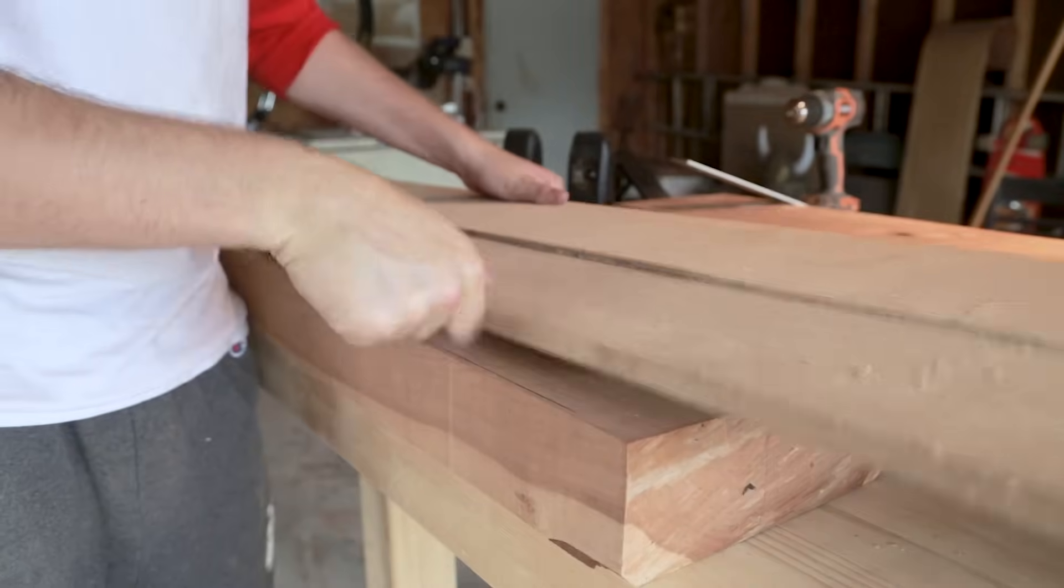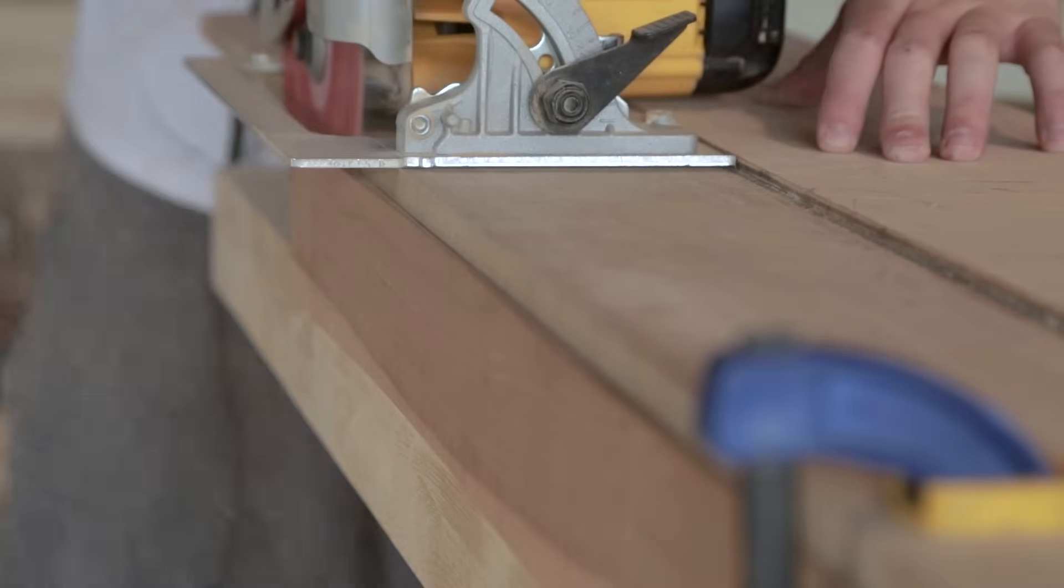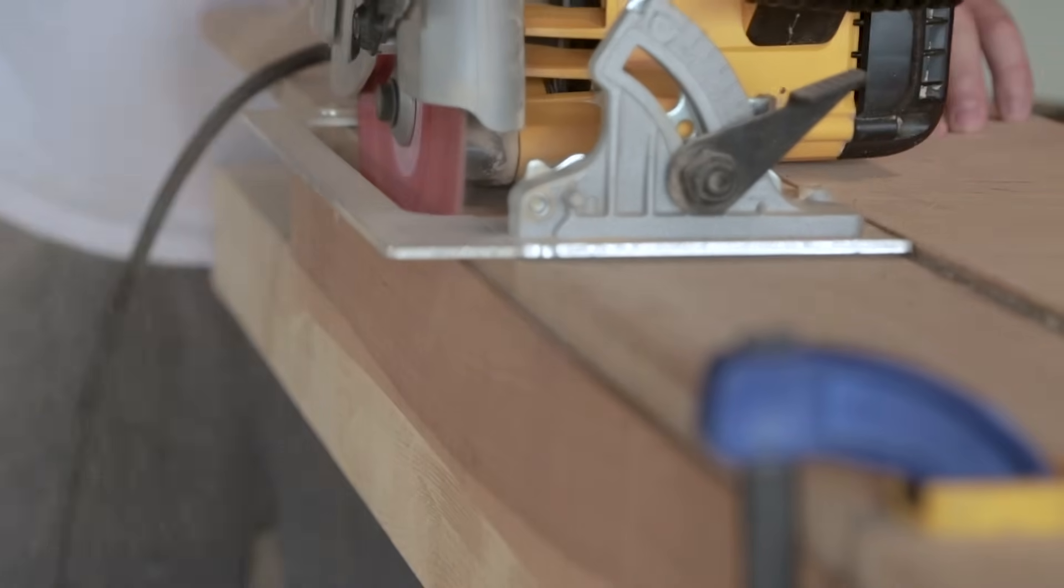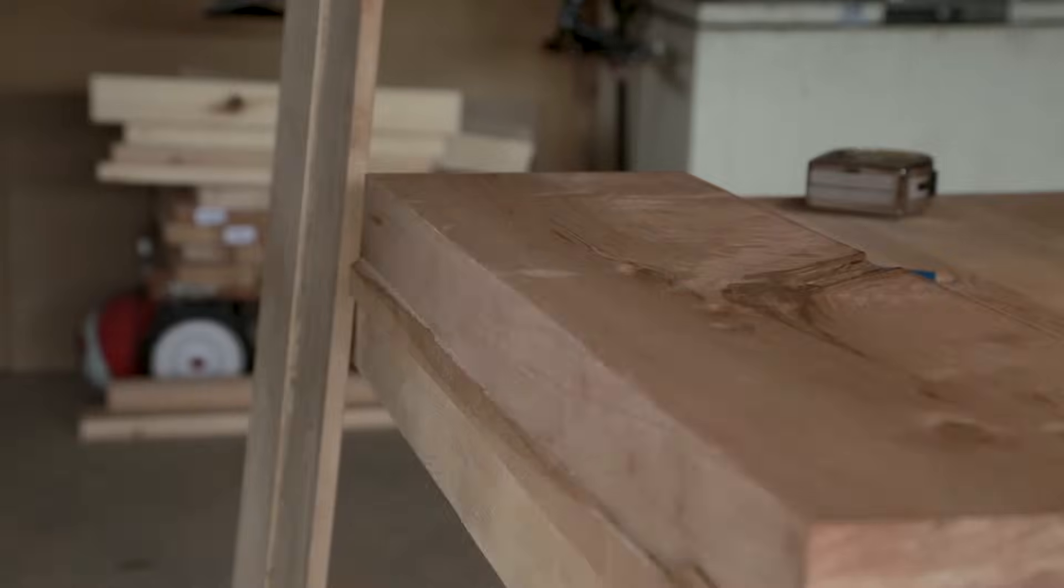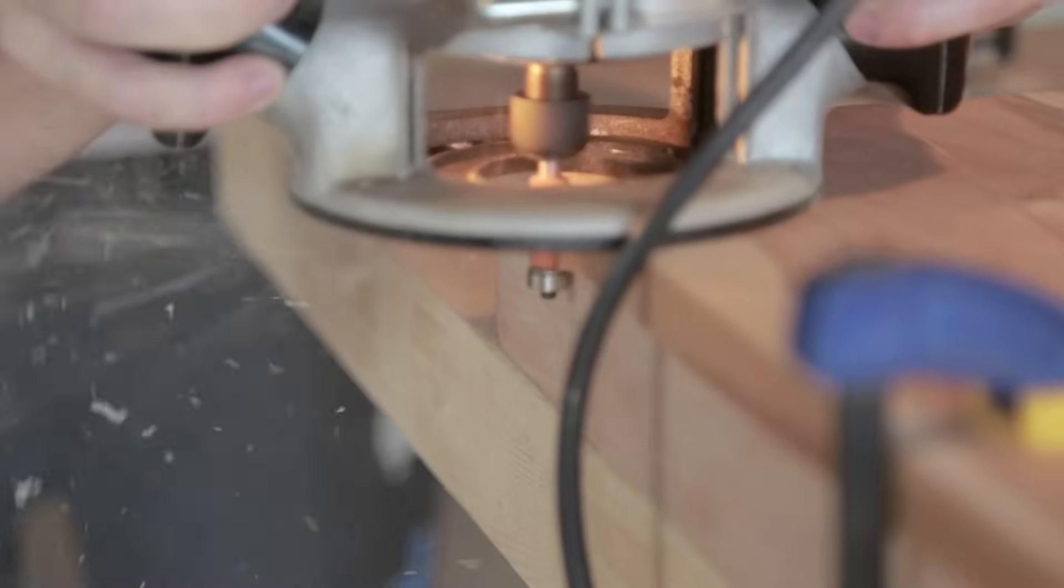From there I made the sides 90 degrees with a straight edge and my circular saw. To remove the rest I used a flush trim bit in the router.